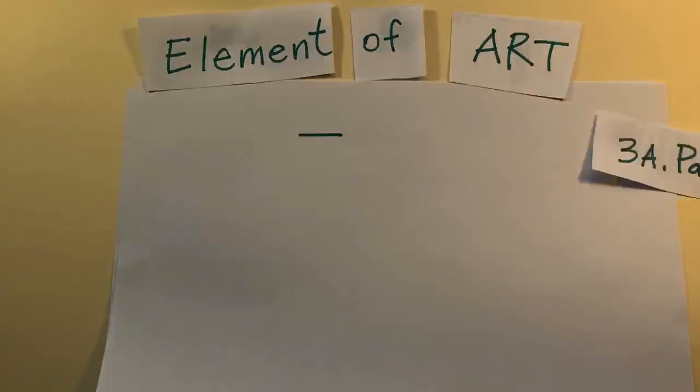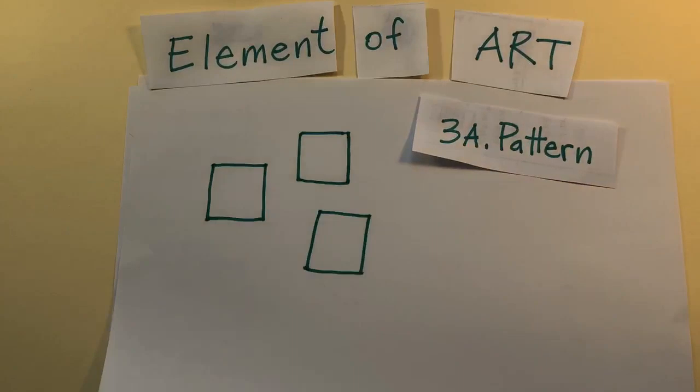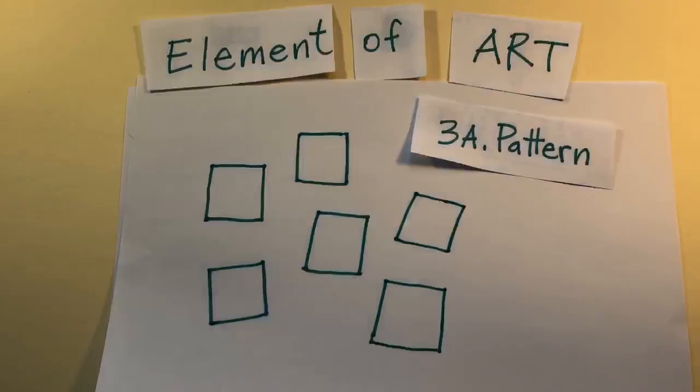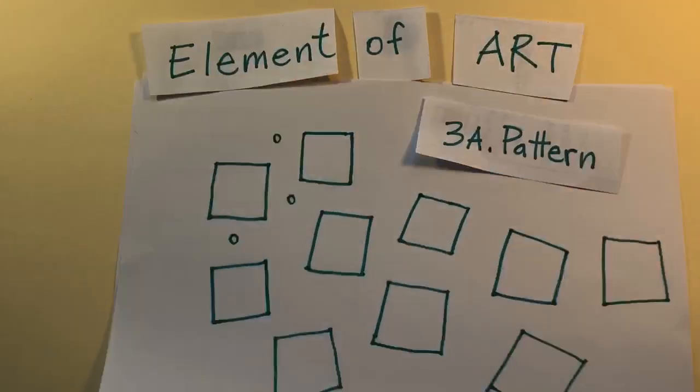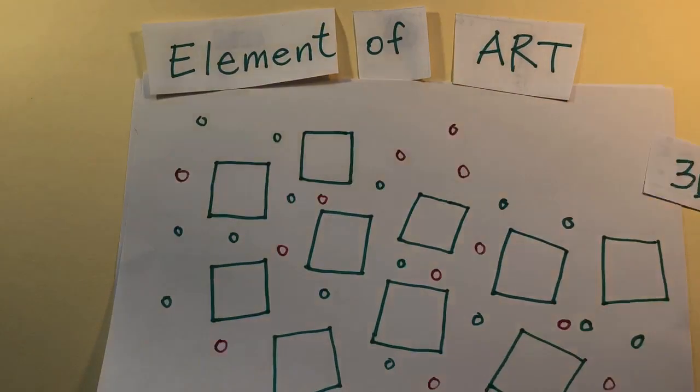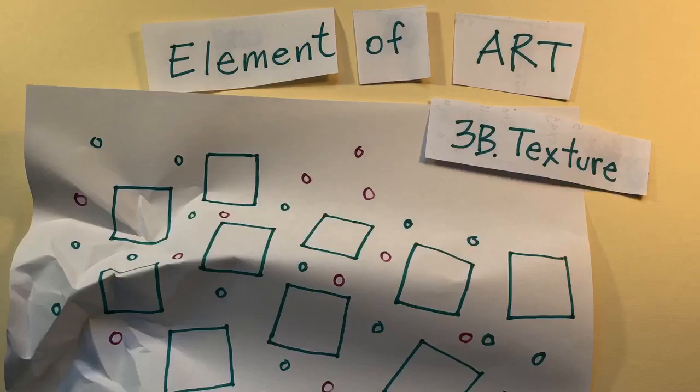The third element of art is pattern. Lines turn into shapes. Repeated shapes turn into patterns. Patterns are what you can see. Textures are what you can feel.